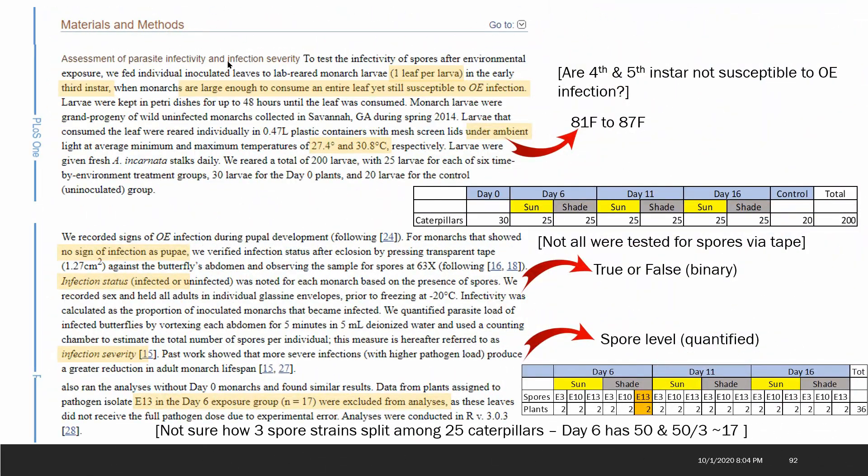Materials and methods: to test the infectivity of spores after environmental exposure, we fed individual inoculated leaves to lab-reared monarch larvae, one leaf per larva, in the early third instar when monarchs are large enough to consume the entire leaf yet susceptible to OE infection. This kind of raised the interesting question for me on whether the fourth and fifth instar are not susceptible to OE infection because I never realized that maybe they would be. The larvae were raised in plastic containers with mesh screen lids under ambient light, presumably no UV light, at an average minimum and maximum of about 81°F to 87°F, probably an incubator. The larvae were given fresh stalks daily. 200 were reared.